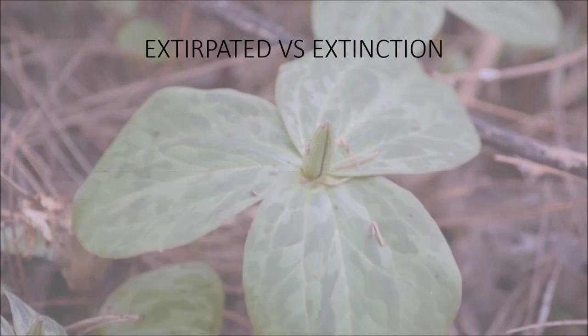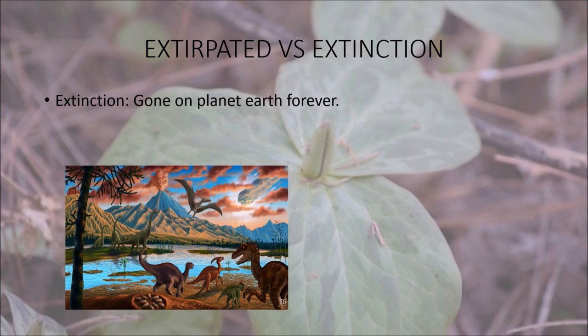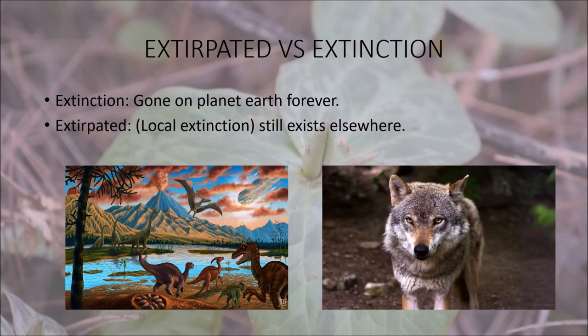Now, extirpated versus extinction. You've heard of extinction — it means they're gone from planet Earth forever. There have been some reports of species thought to be extinct that were rediscovered, but overall we cannot find the organism for a period of time. Extirpated is a newer term — it basically means local extinction.